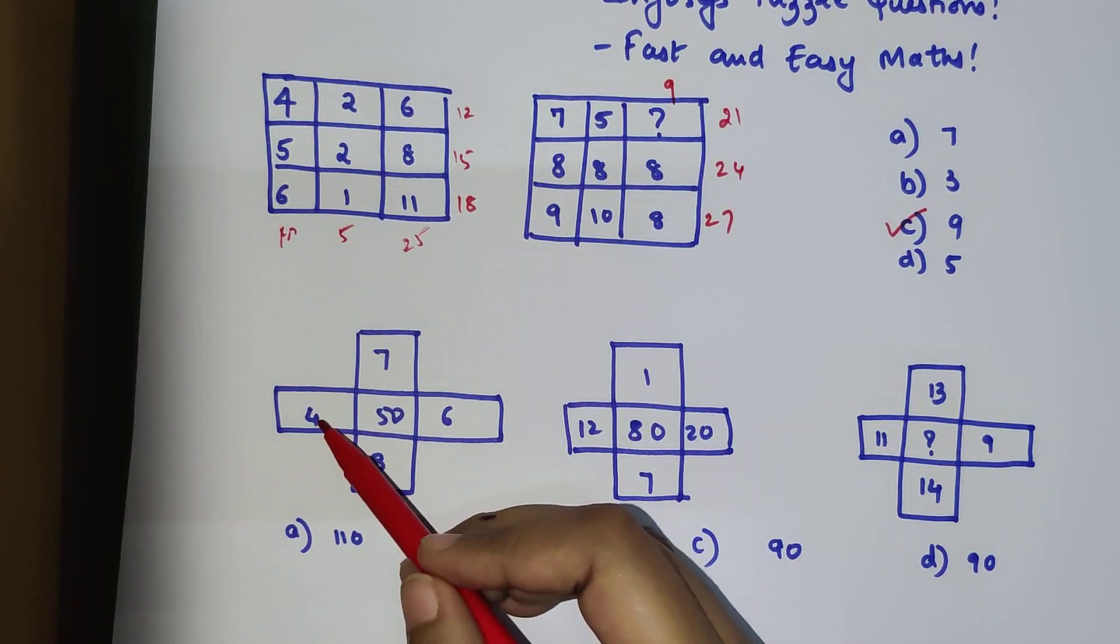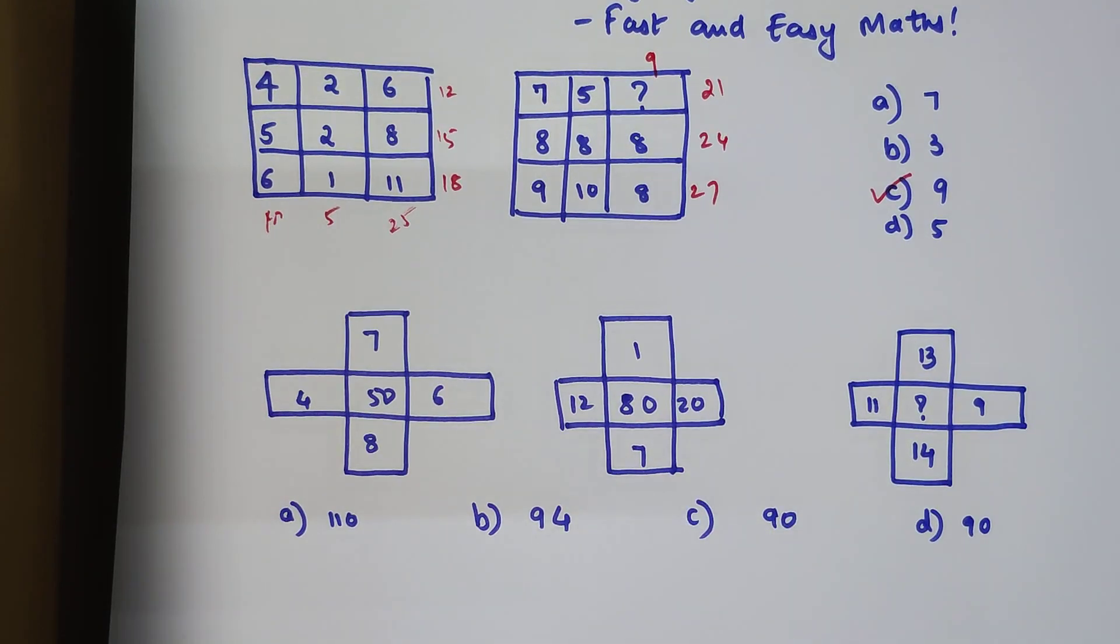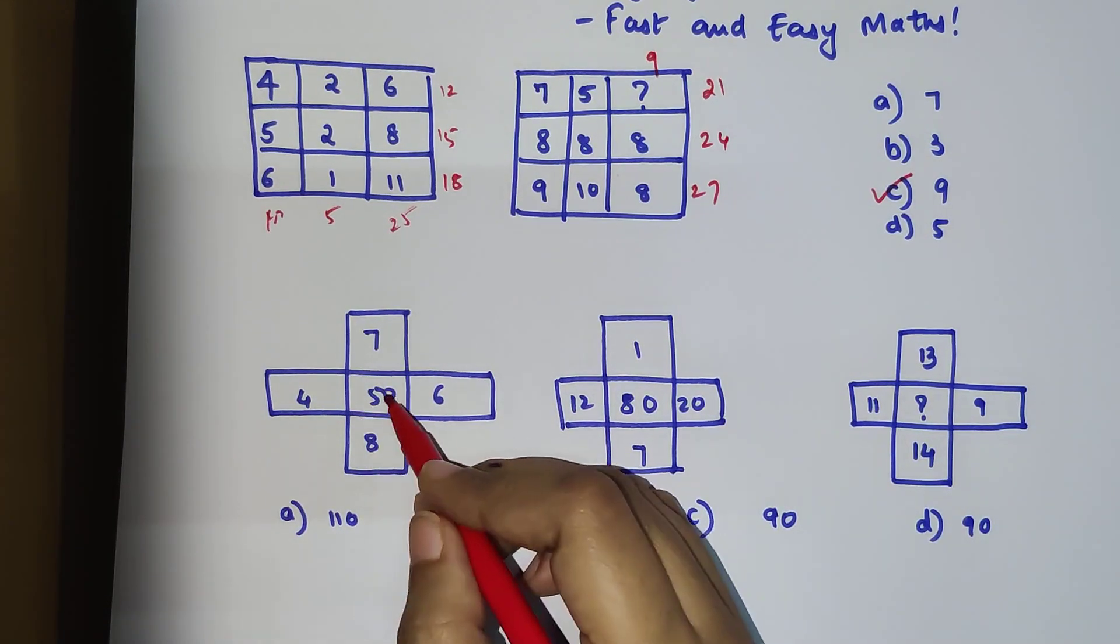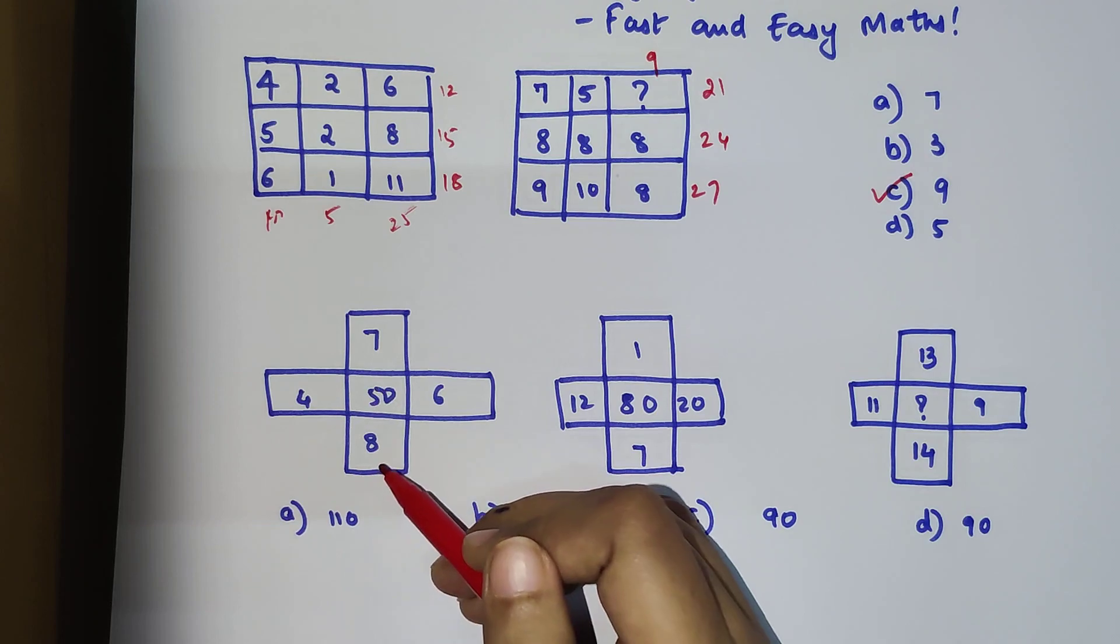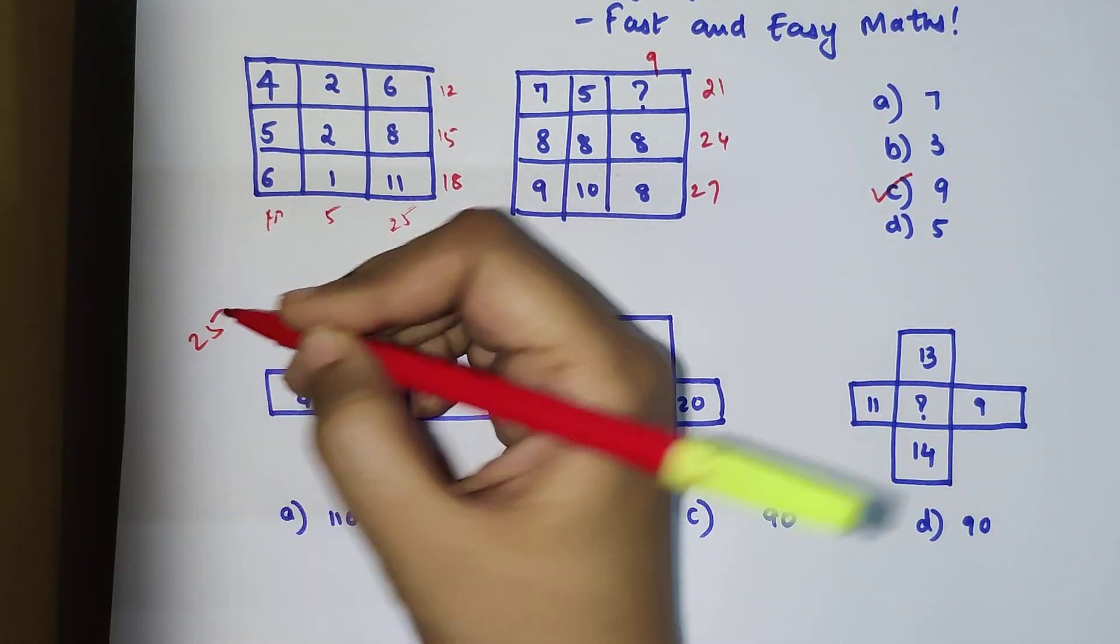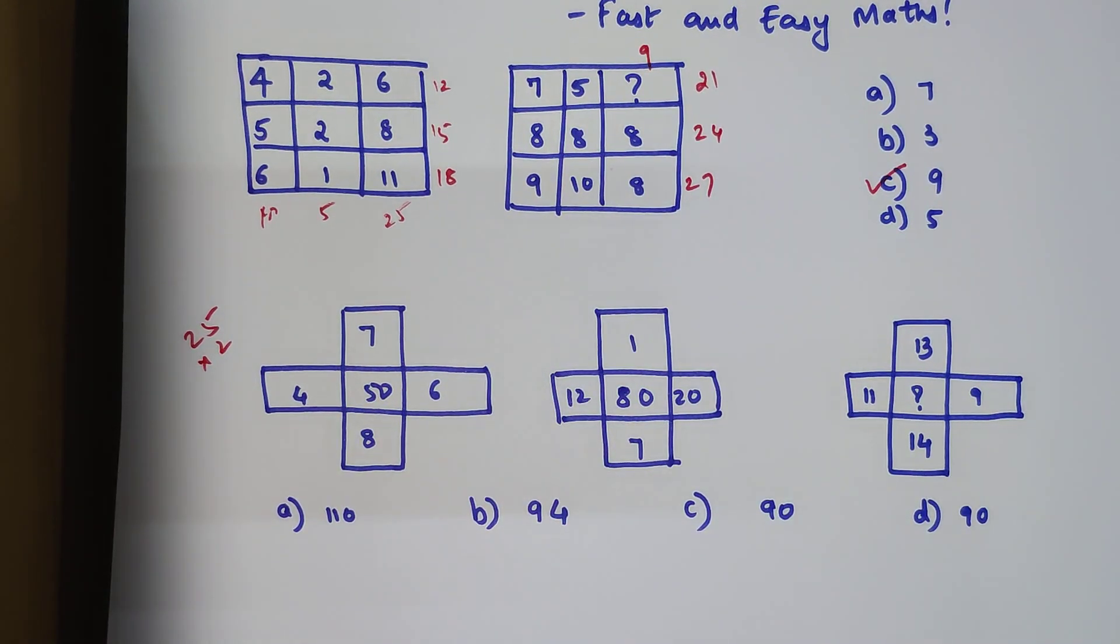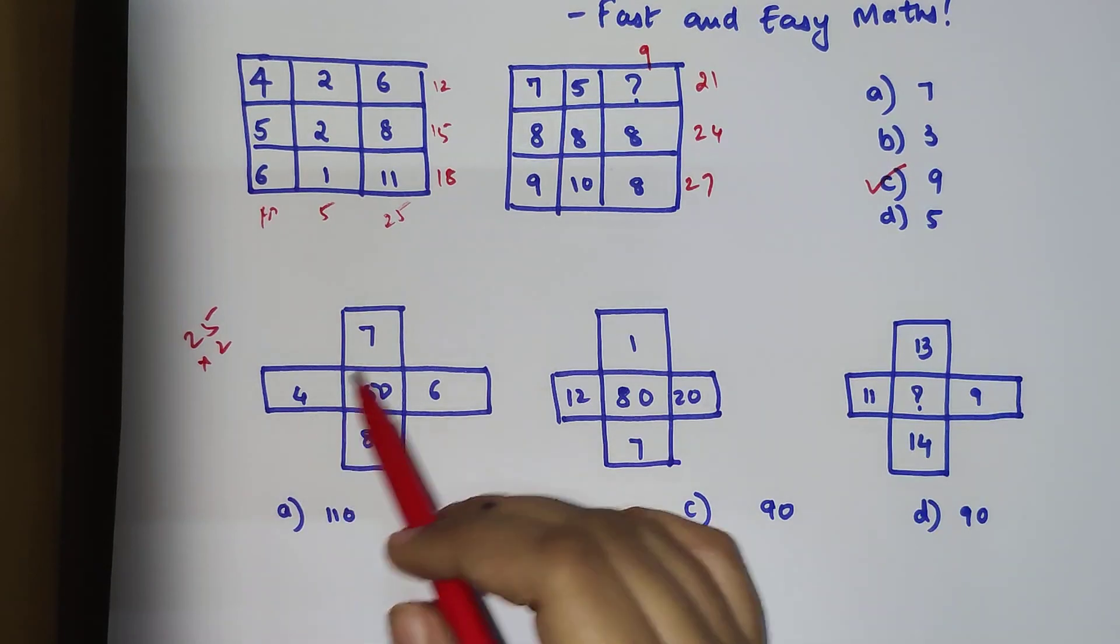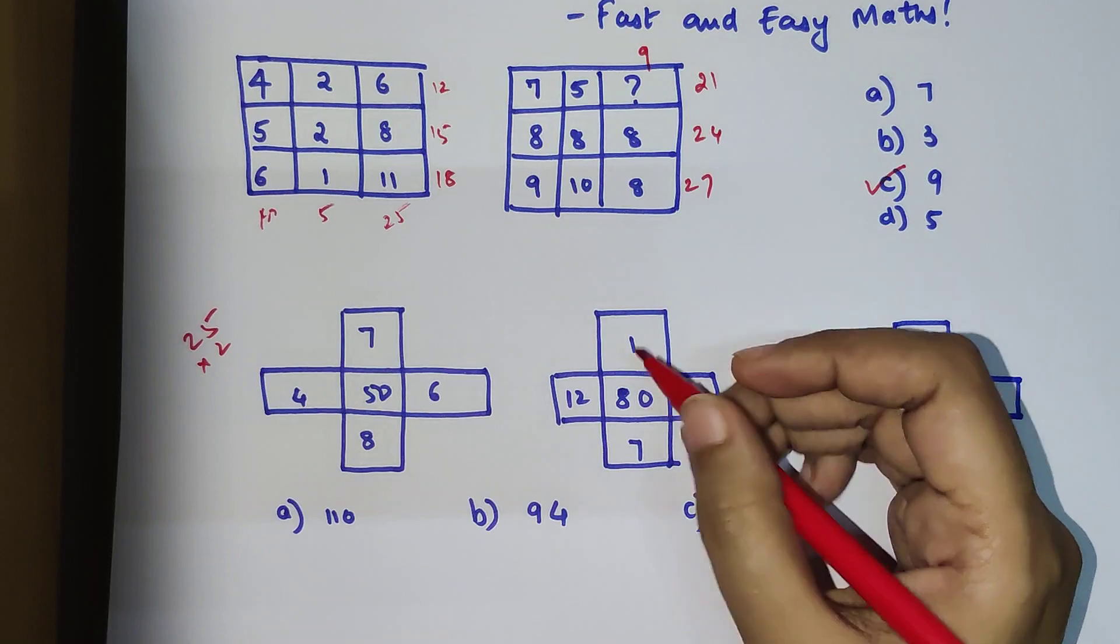Now let's see the next one. Here we have 4, 7, 6, 8 and 50. In these kind of questions, we generally try to assume that there is a connection between all these 4 numbers which is resulting in the centermost number. Let's try and add all of these. When I add 4 plus 6 is 10, 7 plus 8 is 15, so 10 plus 15 is 25, and when I multiply 25 by 2, I get the answer as 50.